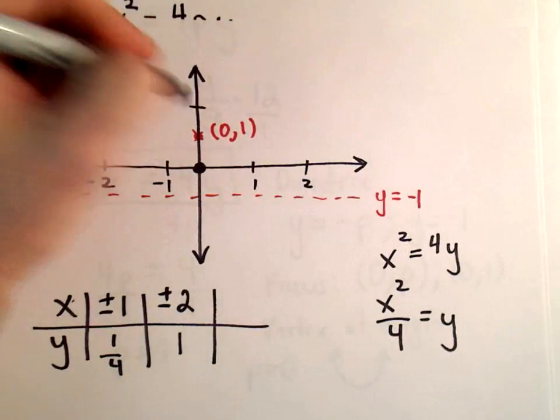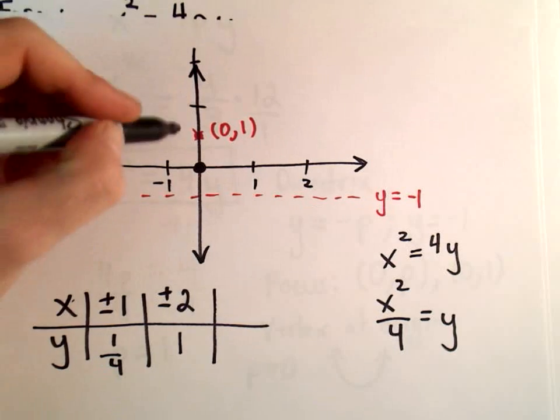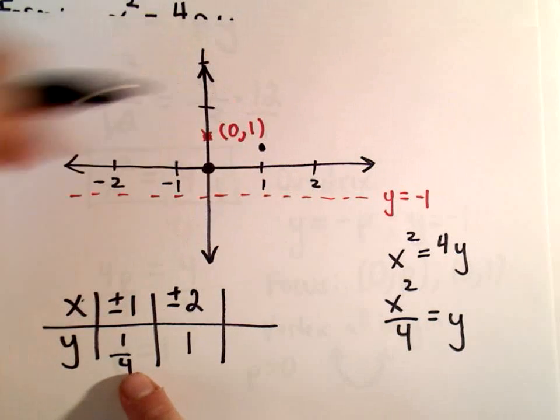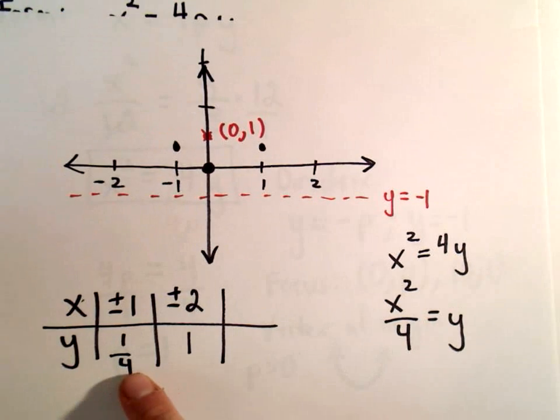Let me put a couple points on my graph. We said at positive 1, we're at 1 fourth, right about there. Likewise, at negative 1, we're at 1 fourth.